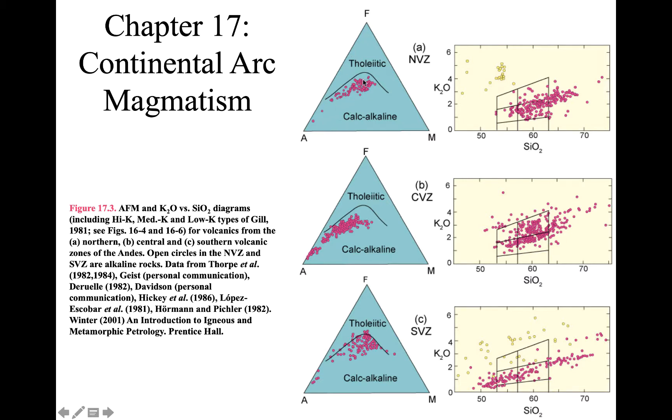Now, when I was a student, we were taught that anything that's calc-alkaline comes from a subduction zone. We found that that's really not true. There's a lot of stuff in the ocean basin that is calc-alkaline, even though it's not subduction related. But subduction rocks tend to migrate towards this alkali end member.